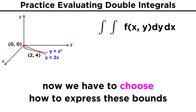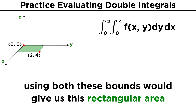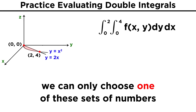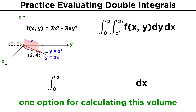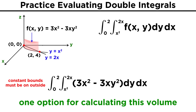Now we must choose how to express these bounds. Our x coordinate runs from 0 to 2, and our y coordinate runs from 0 to 4. However, using both these bounds gives us the rectangular area, not the area between the curves. Instead, we choose one and the curves become the bounds for the other variable. If we choose to run x from 0 to 2, then y must run from the lower curve to the higher curve — in this case from x squared to 2x. We always must choose lower values as lower bounds and higher values as upper bounds, otherwise we will be making an error in sign. So the volume is the double integral over x from 0 to 2, y from x squared to 2x, of 3x squared minus 3xy squared, dy dx.